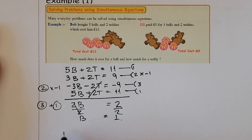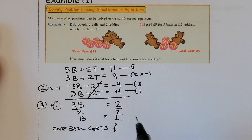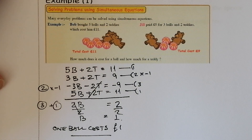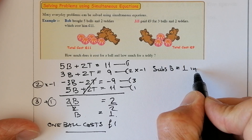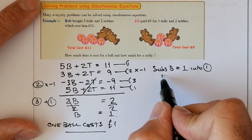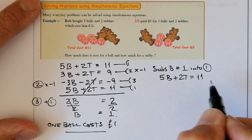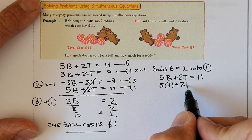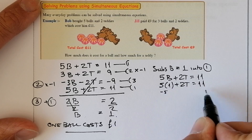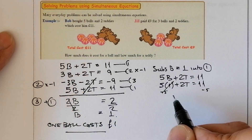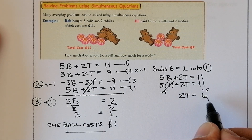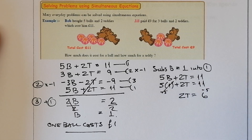So 1 ball costs £1, because we're working in pounds. For the teddy, we're going to substitute B equals 1 into equation number 1. Equation 1 is 5B plus 2T equals 11. Substituting gives 5 times 1 plus 2T equals 11, so 2T equals 6. Dividing both sides by 2 leaves T equal to 3. So the teddy costs £3.